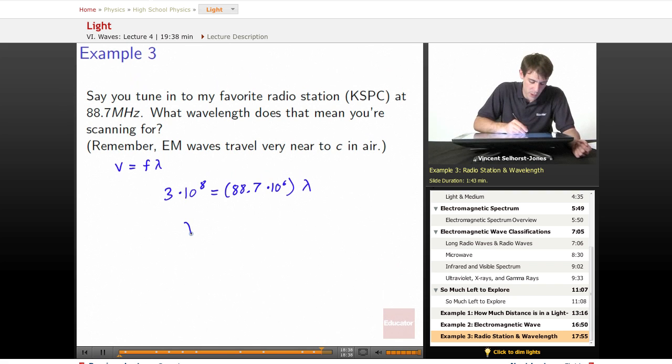So the wavelength is going to be equal to 3 times 10 to the eighth divided by 88.7 times 10 to the sixth. Which means that we're going to be looking for a wavelength that's 3.38 meters.